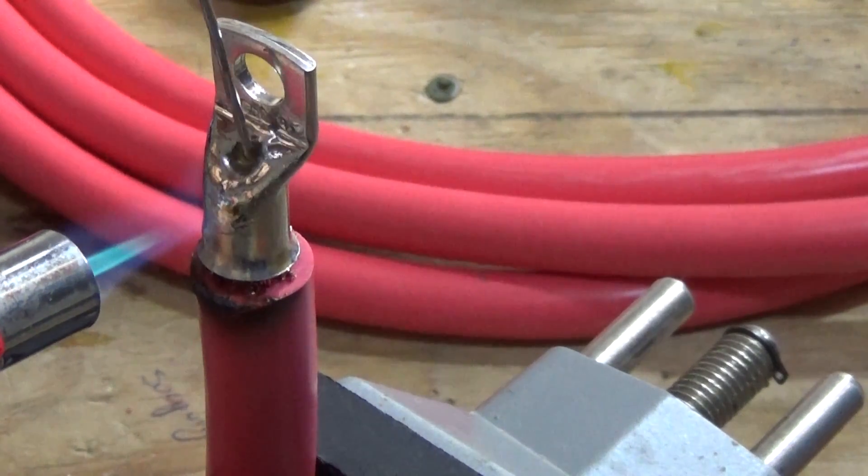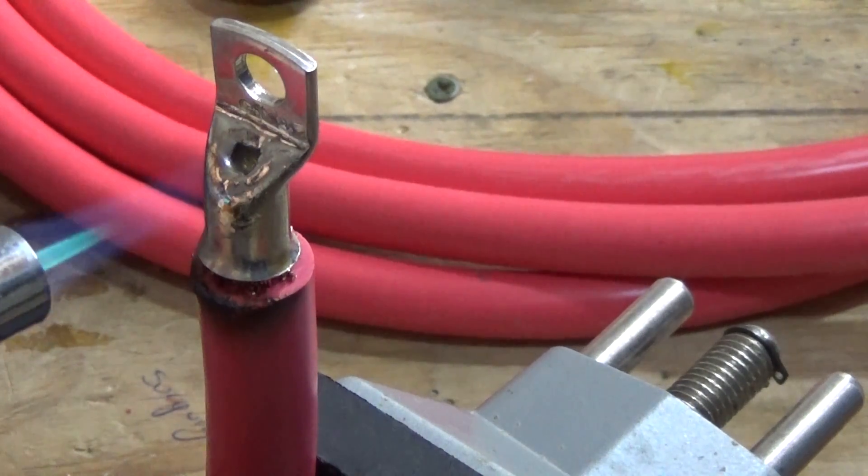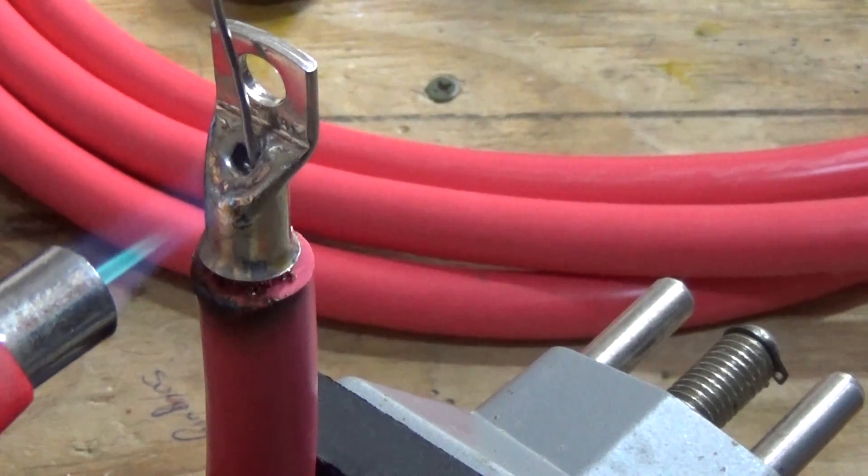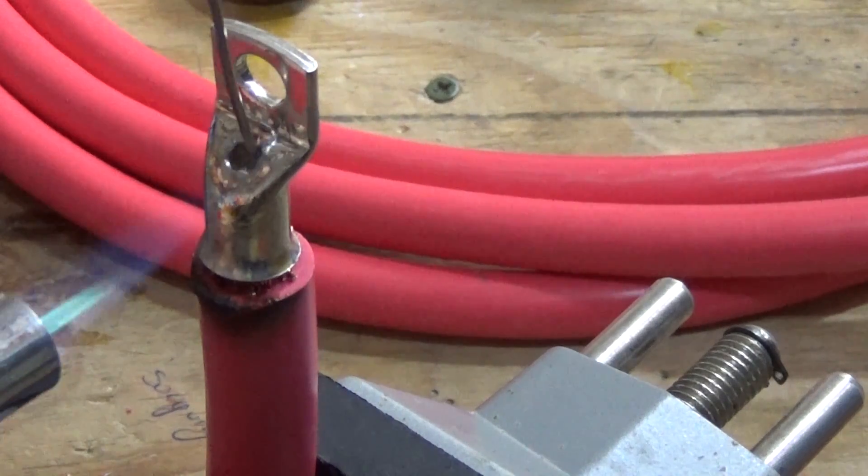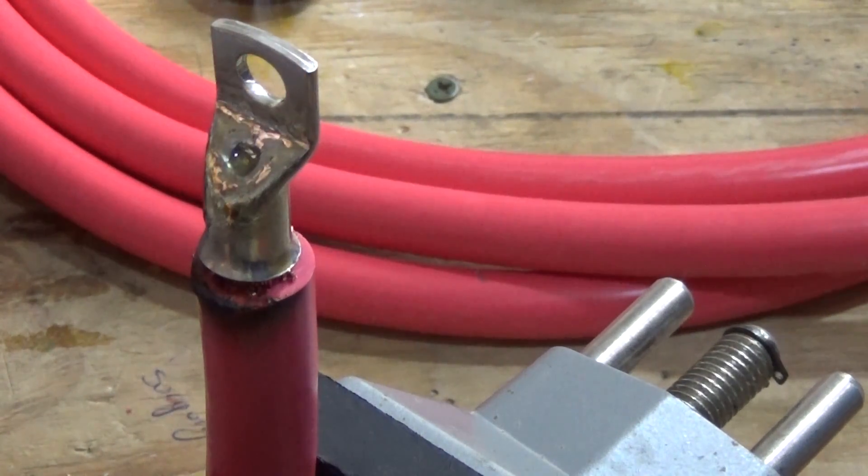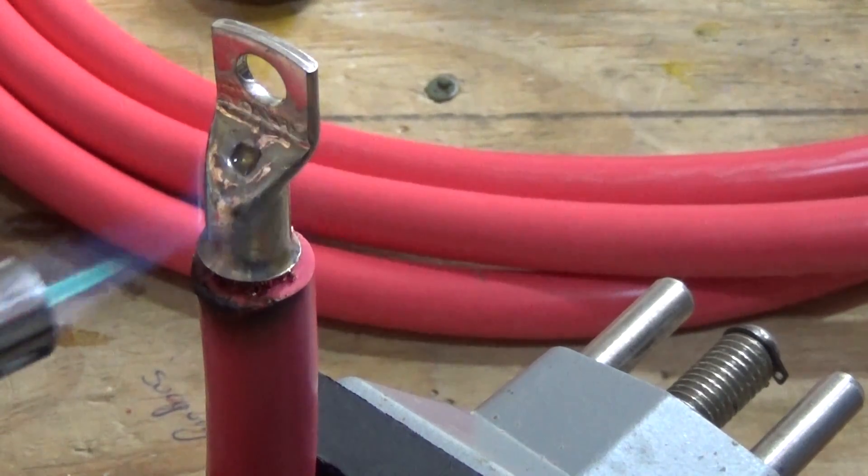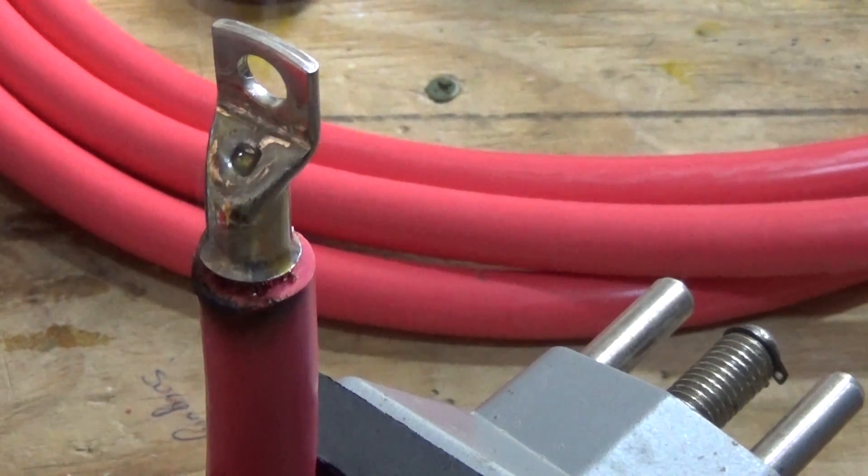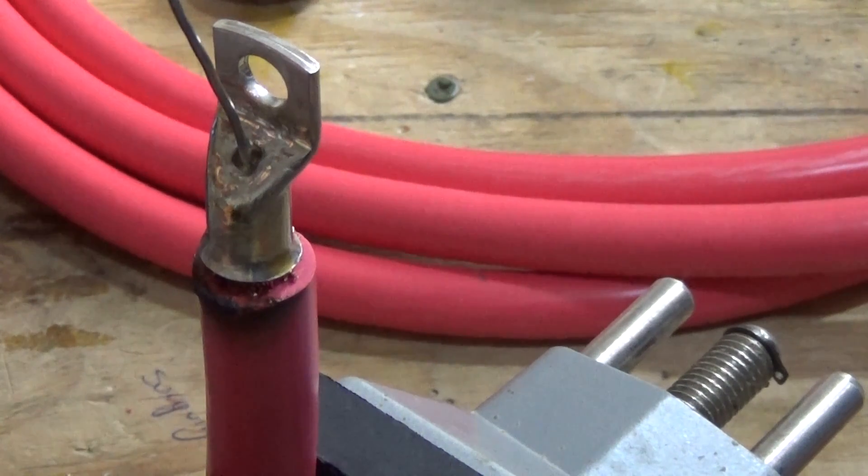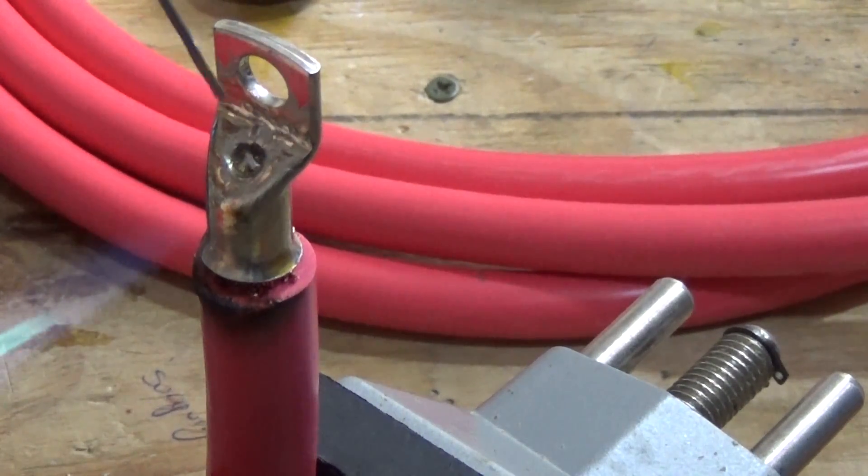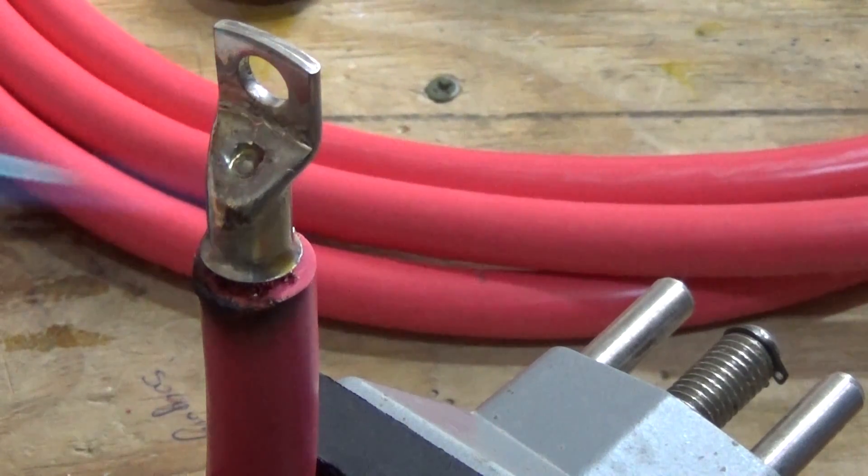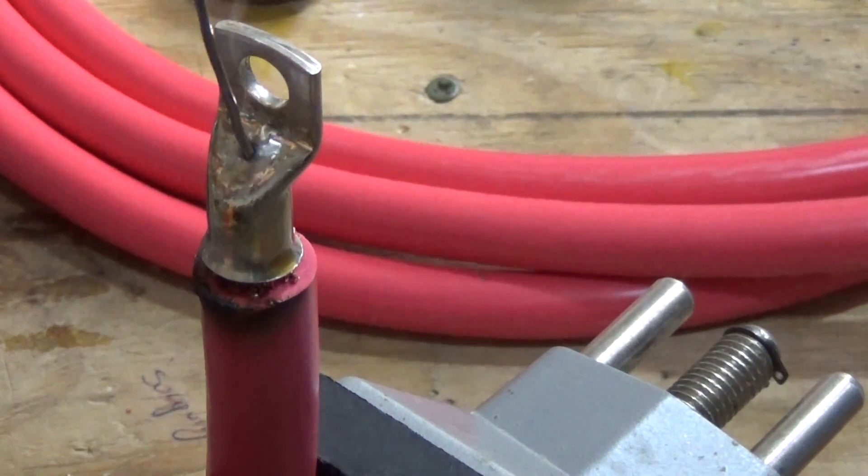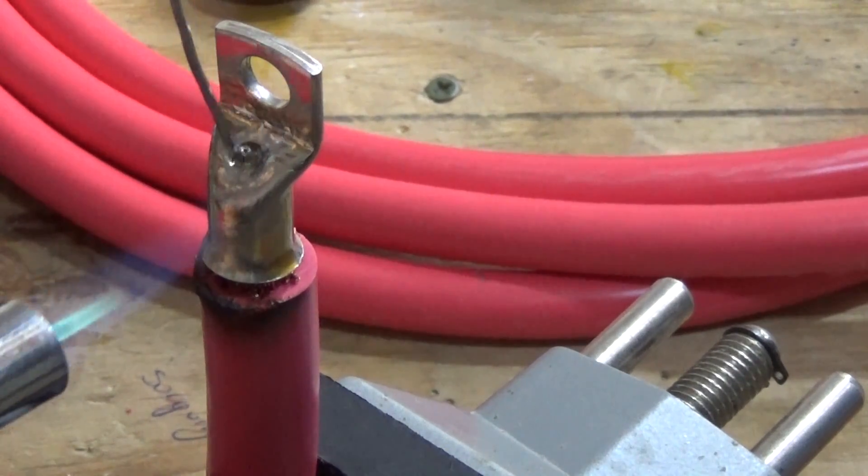Basically, you just keep feeding the solder in and this will be now bonding with the terminal and the wire. Eventually, we made it a bit too hot there. That looks like we've filled it right up.